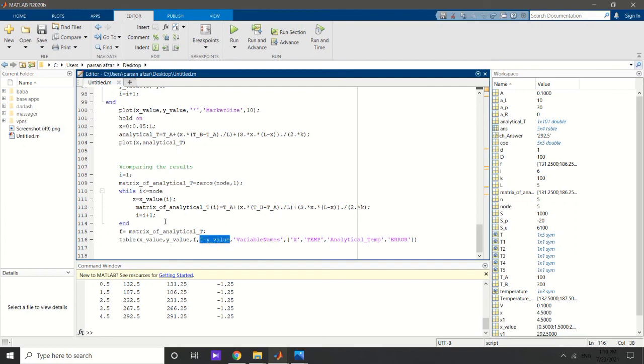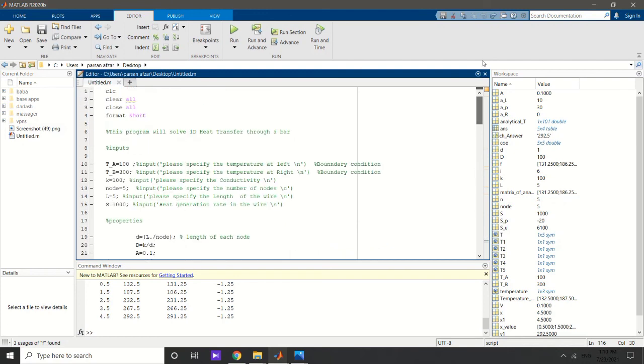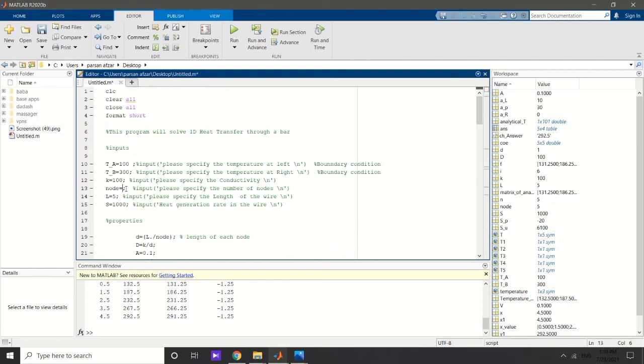In order to compare the results, I defined a matrix and calculated the amount of analytical T at x values where the temperature is calculated previously with CFD code, then compare it in a table which shows the amount of f minus y value.